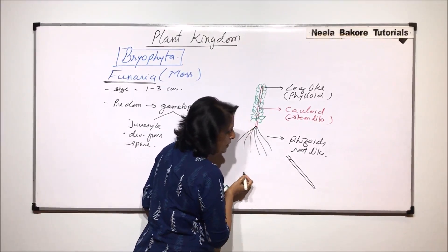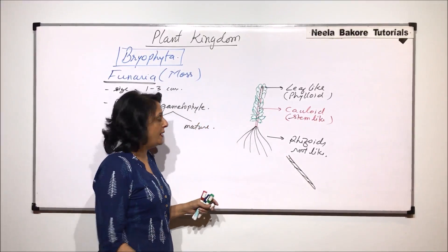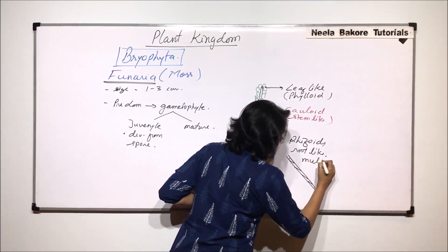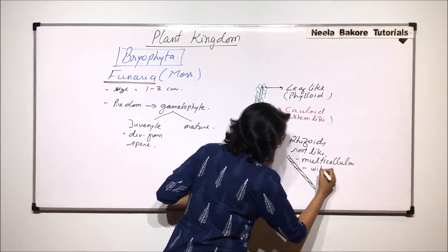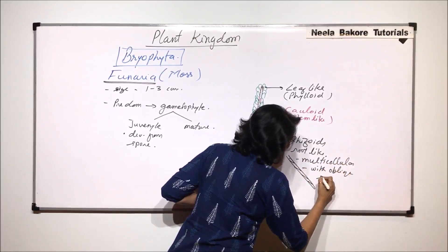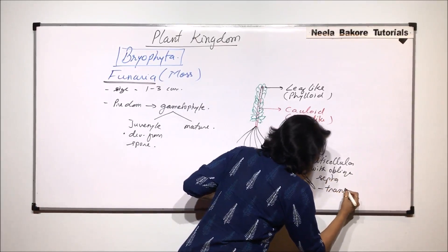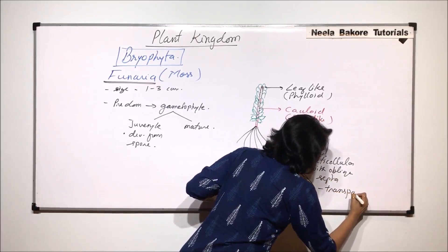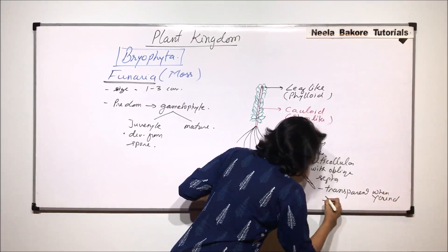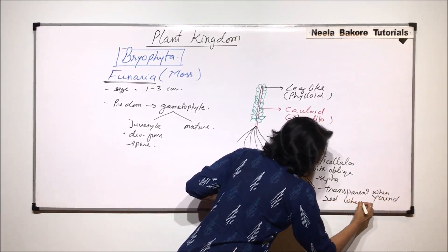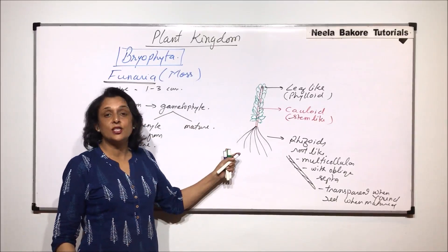So instead of the normally seen septa, these septa are oblique. So these are multicellular, with oblique septa and when they are young they are transparent or colorless, transparent when young and they turn reddish brown when matured. So when they matured these structures they become reddish in color.